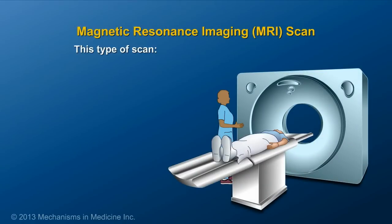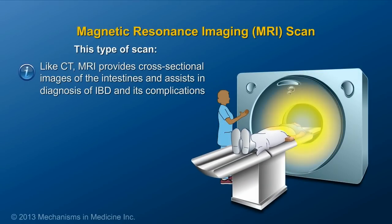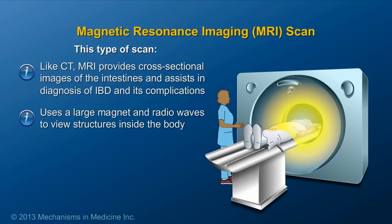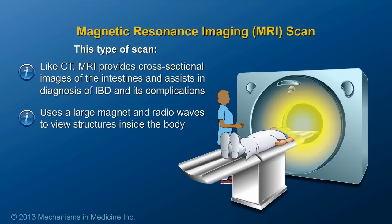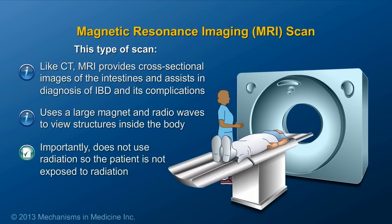Like CT, MRI provides cross-sectional images, or slices, of the intestines and assists in diagnosis of IBD and its complications. However, MRI uses a large magnet and radio waves to view structures inside the body. Importantly, MRI does not use radiation, so the patient is not exposed to radiation.